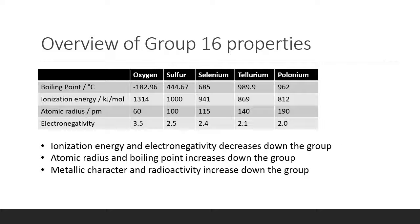There are also some general trends moving down the group. We see an increase in boiling point due to a transition from simple molecular structure to metallic structure. There is a decrease in ionization energy, increase in atomic radius, and decrease in electronegativity, all due to the fact that electrons are being placed in orbitals of higher principal quantum number, decreasing nucleus-electron attraction, and increasing the probability that electrons are found further from the nucleus.